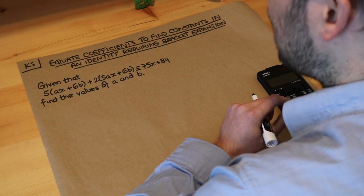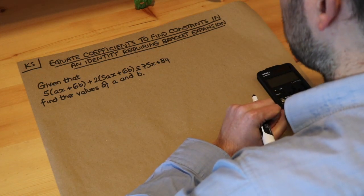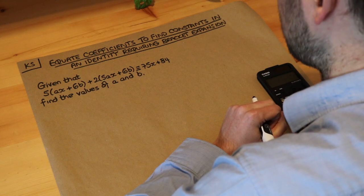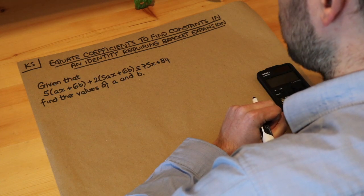Hello and welcome to this Dr. Ross-Mass key skill video on equating coefficients to find constants in an identity requiring bracket expansion.